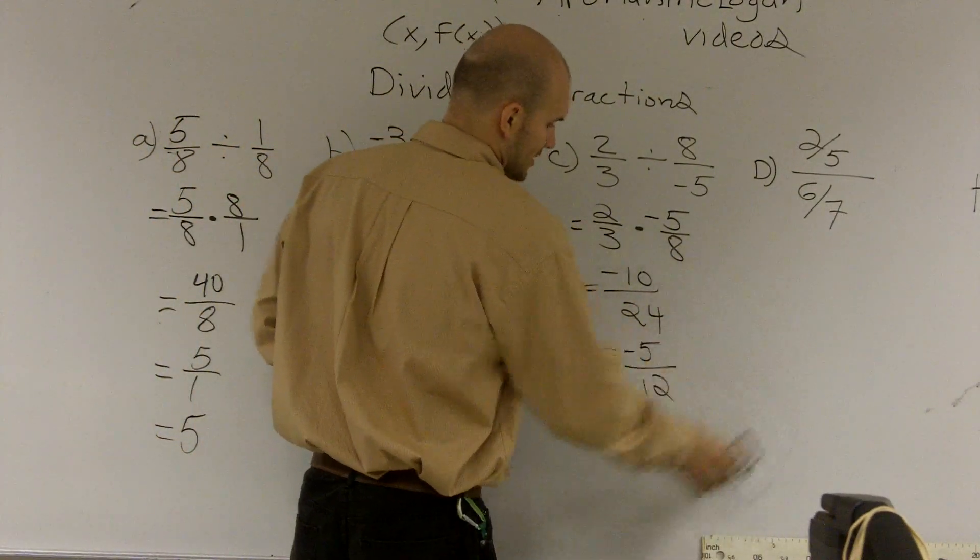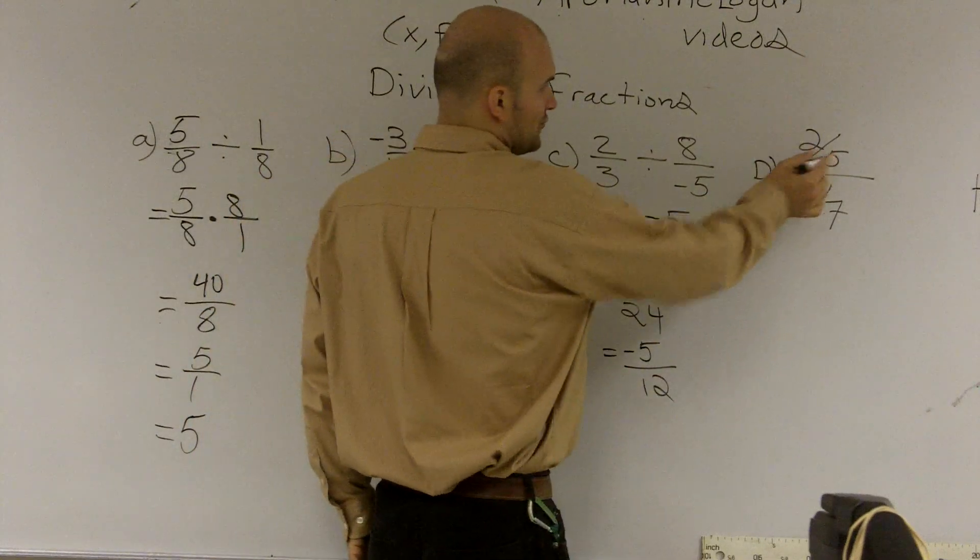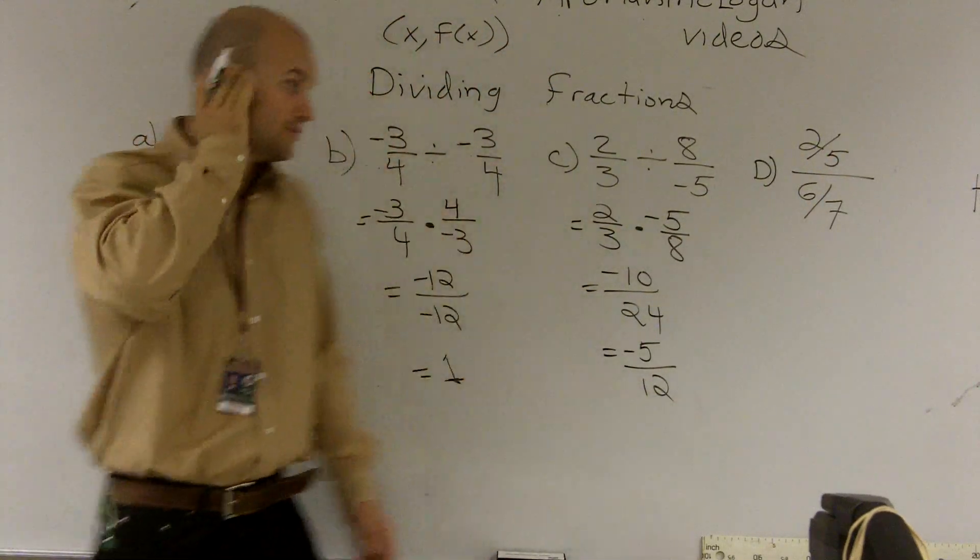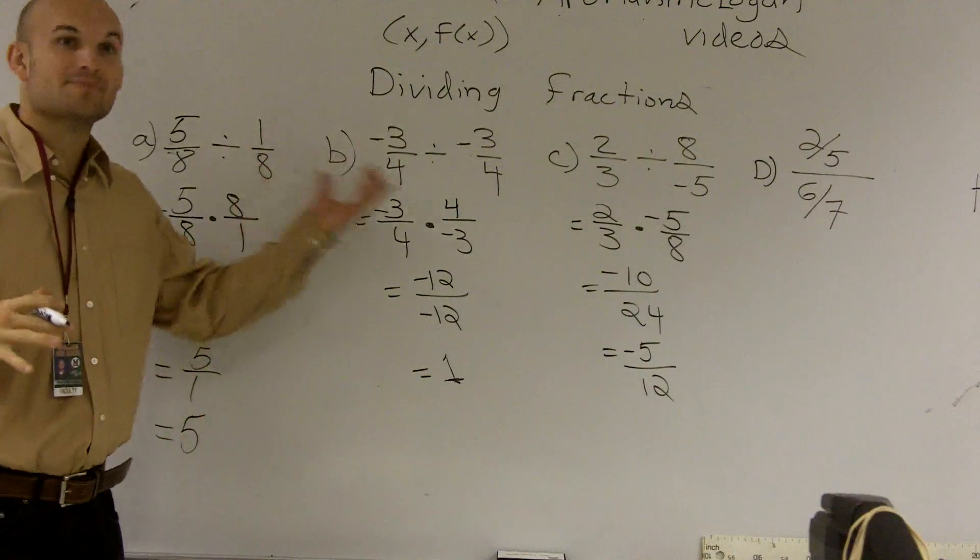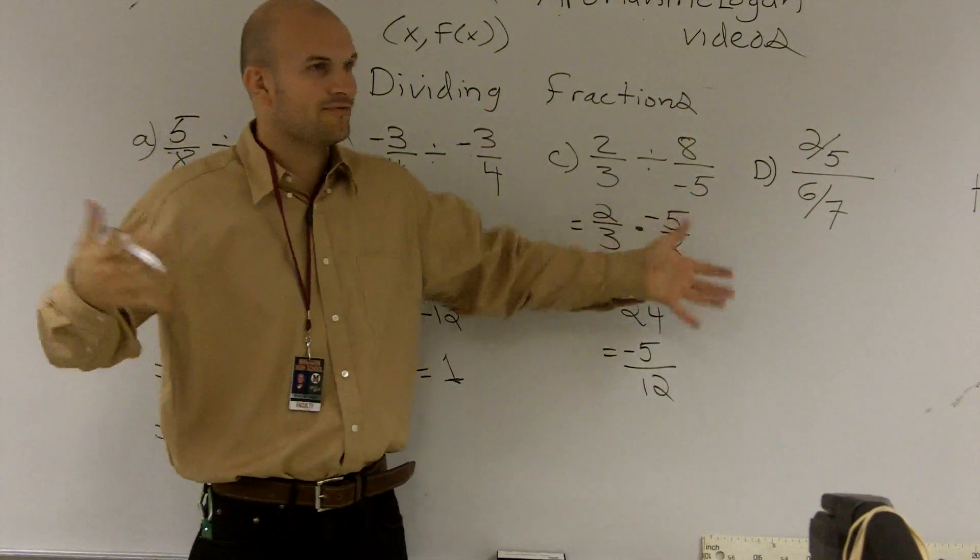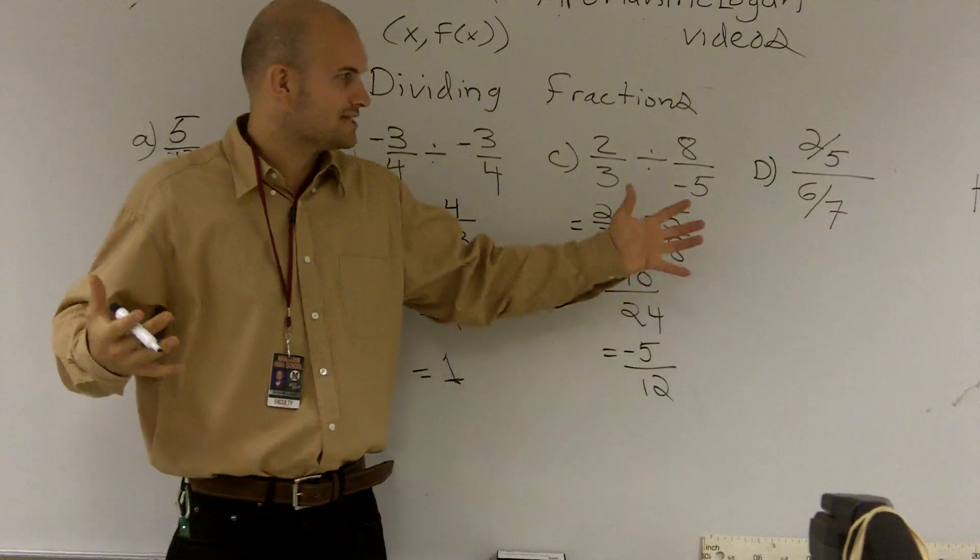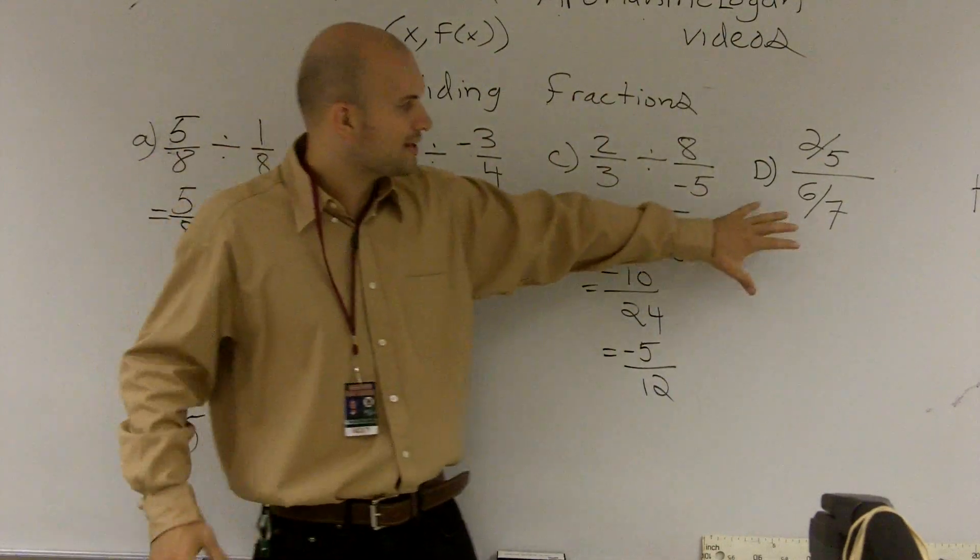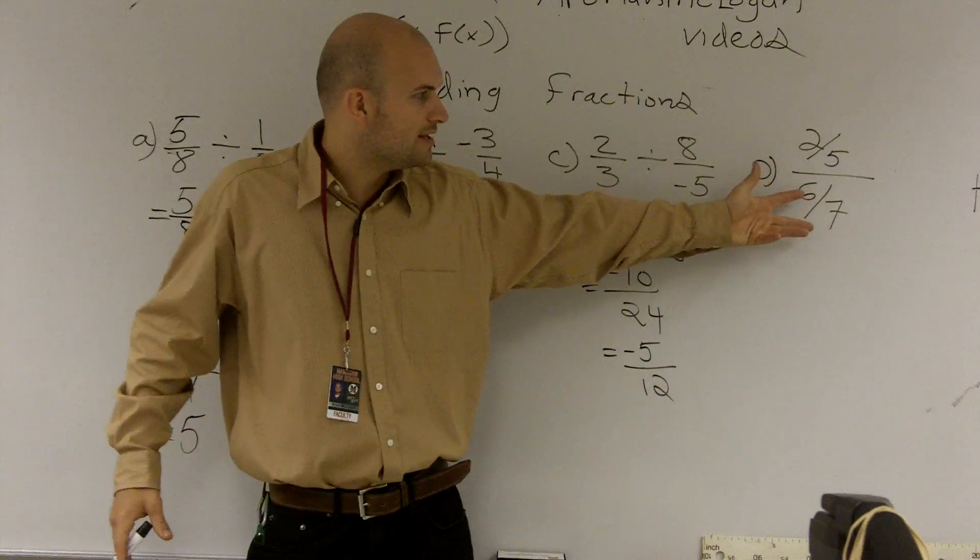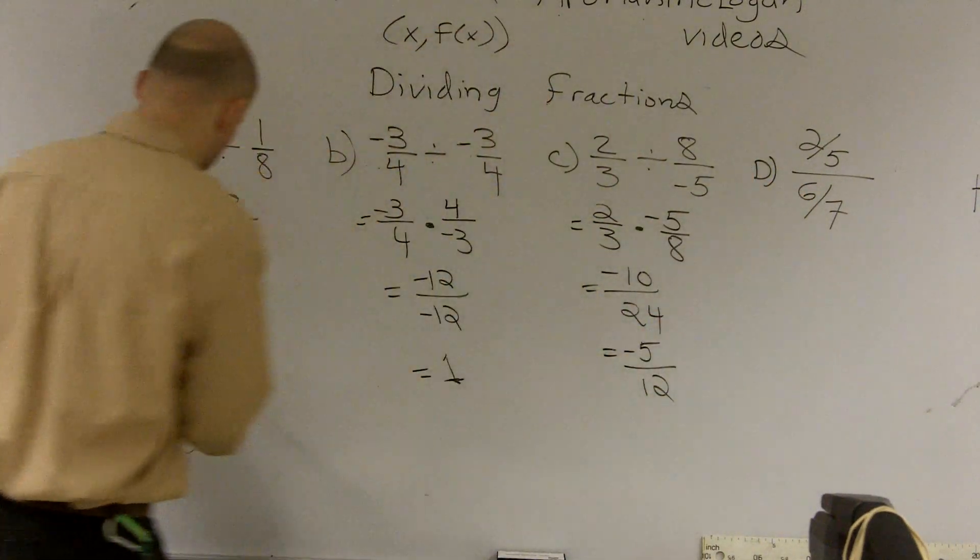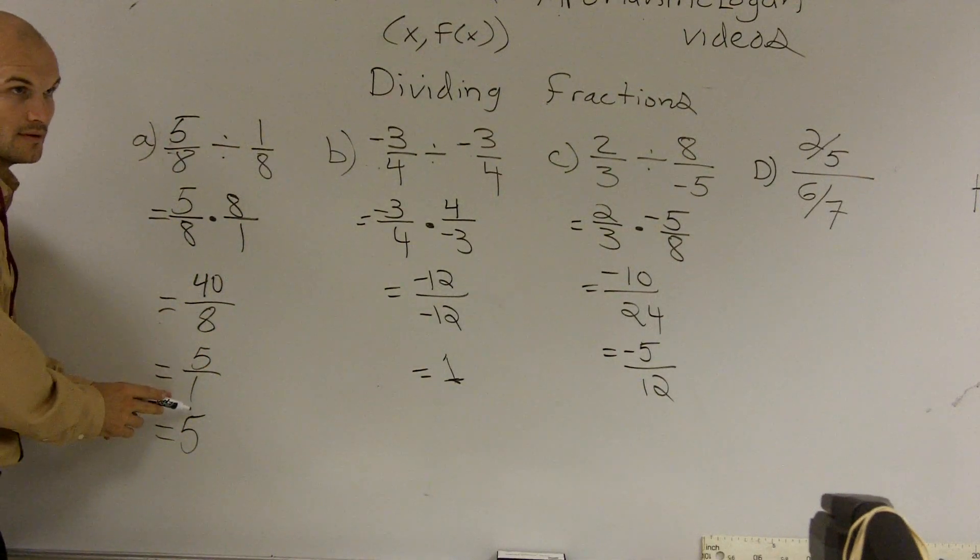Last one. Here's our big problem. 2/5 divided by 6/7. This looks a lot different than what you were doing before, right? Guess what? It's the same thing. But how do I flip, though? Everything looks so confusing, so different. Well, hold on. What I'm trying to get to real quick is, remember, any number divided by 1, like 5 divided by 1, gave you what? 5.